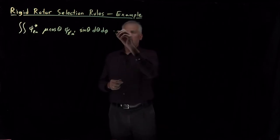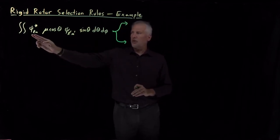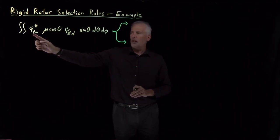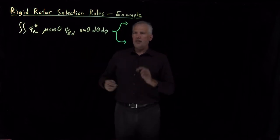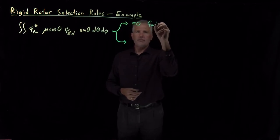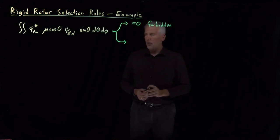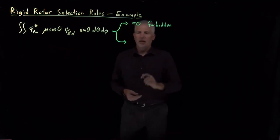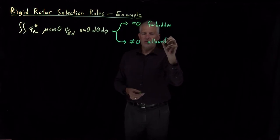So remember that this expression tells us the intensity of an absorption, a transition that involves light and going from some rigid rotor level L-M to some different level L-prime, M-prime. And if this integral is equal to zero, then that transition is forbidden. It won't happen. Light won't be absorbed to make that transition. On the other hand, if that integral is non-zero, then the transition is allowed.